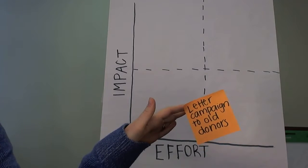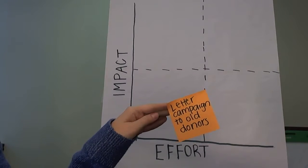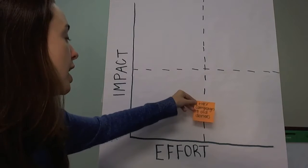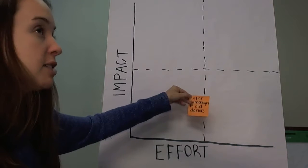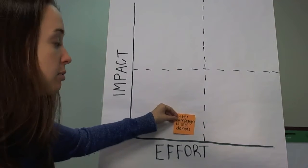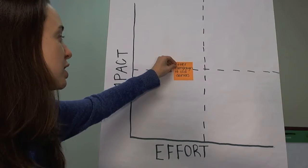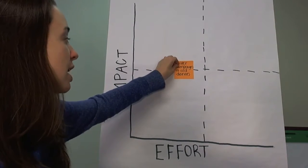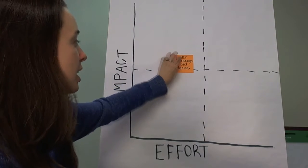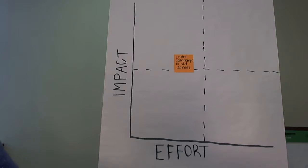These donors have supported the program — maybe the sports program or art program — but we don't know if they'd support the computer lab. The effort is maybe in the middle because we'll need to write a nice letter, get all their addresses, make sure they're correct in the Excel documents, and mail it. Luckily it will be standardized so effort is on the lower end. Impact is maybe in the middle — we know they're supporters but we don't know if they'll donate to the computer lab.